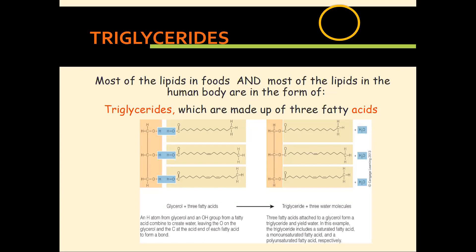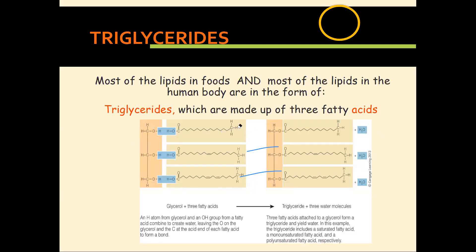Looking at triglycerides in more detail: the word 'tri' means three — a triglyceride is made up of three fatty acids attached to a glycerol molecule. Glycerol is a derivative of carbohydrate and contains three carbon atoms, each attached to one fatty acid. Think of glycerol as the backbone of the triglyceride. All fatty acids are molecules composed mostly of carbon and hydrogen atoms. Glycerol plus three fatty acids — through condensation releasing three water molecules — gives you your triglyceride.